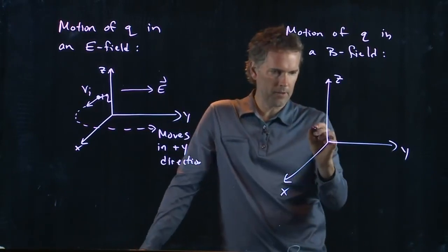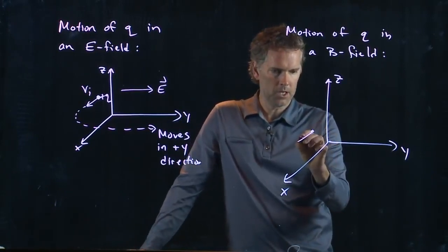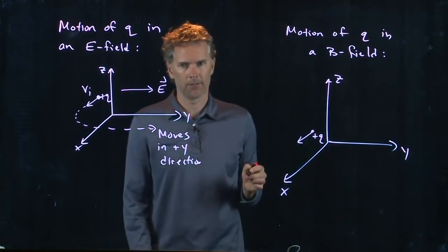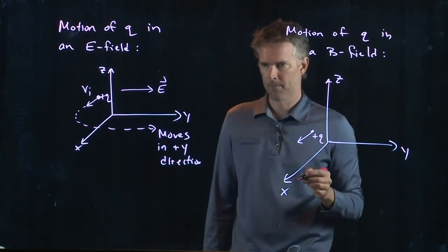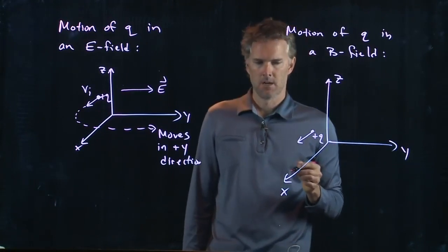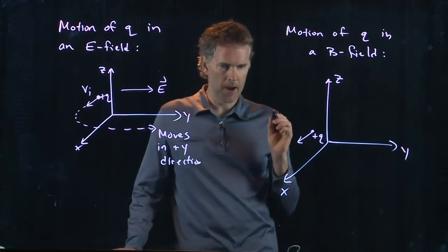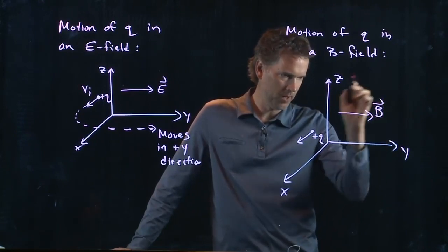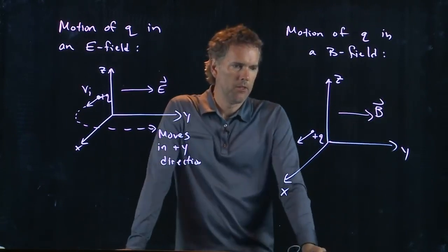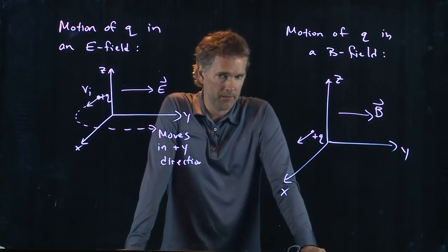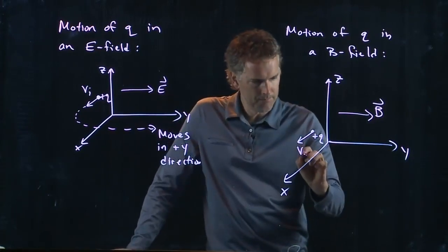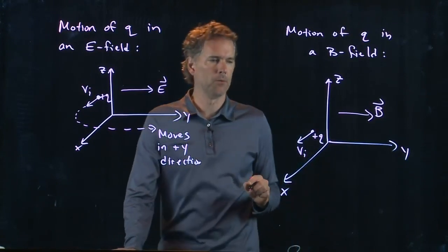And now let's have this Q initially moving in the X-axis direction. Well, if my B-field is now pointing everywhere to the right, then there has to be a force on this thing. Right? And the force on it, we determine from our right-hand rule.